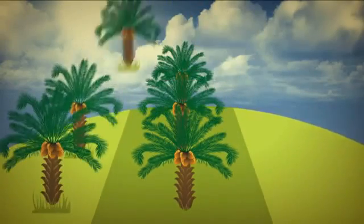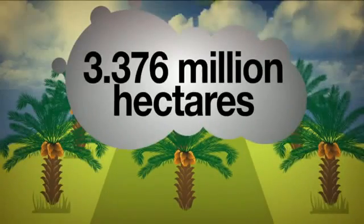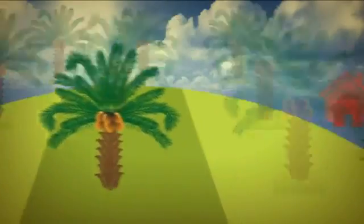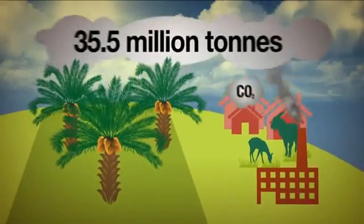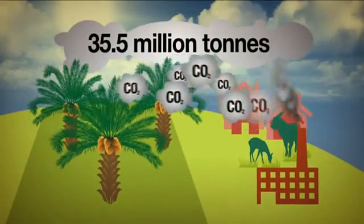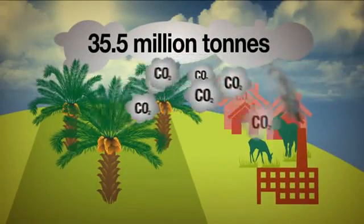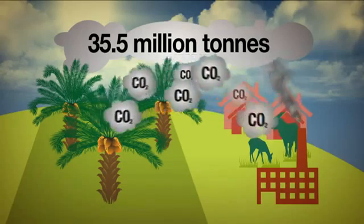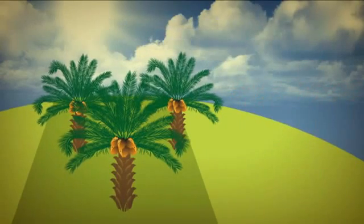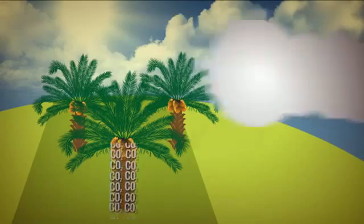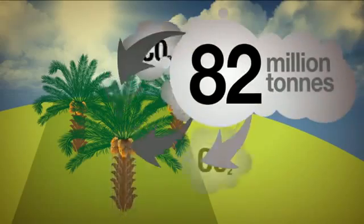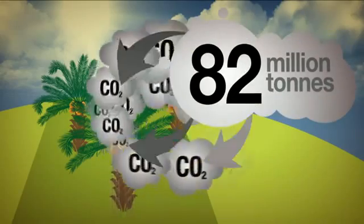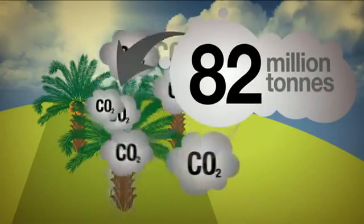In the year 2000, Malaysia had 3.376 million hectares of oil palm plantations. 35.5 million tons of carbon dioxide was emitted from LULUCF and the agricultural sector. But amazingly, oil palm plantations removed 82 million tons of carbon from the atmosphere.